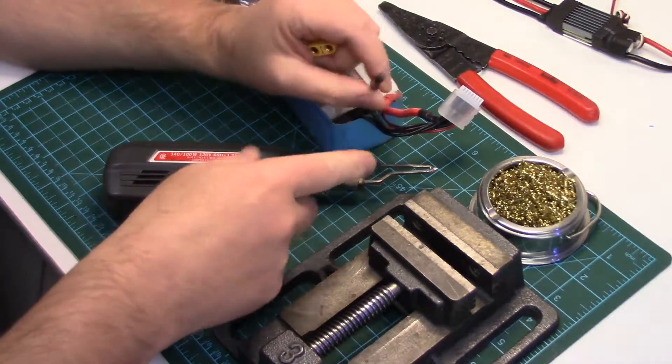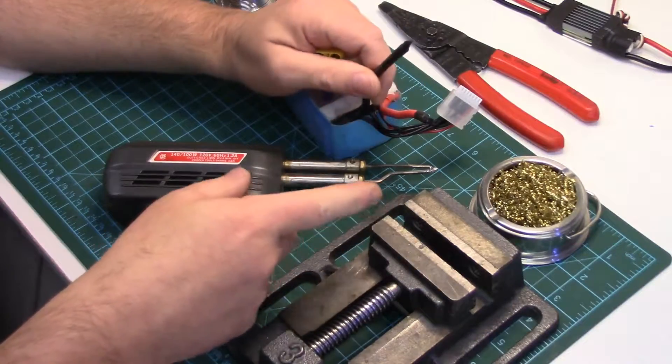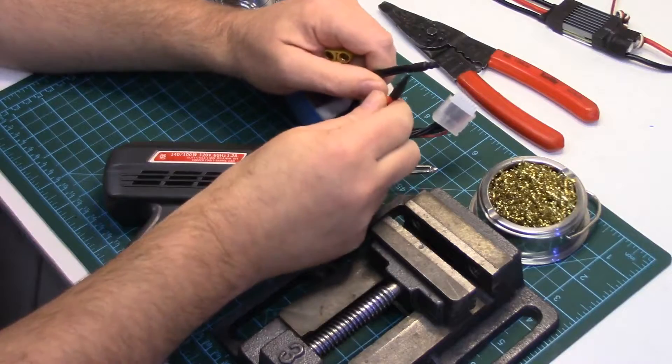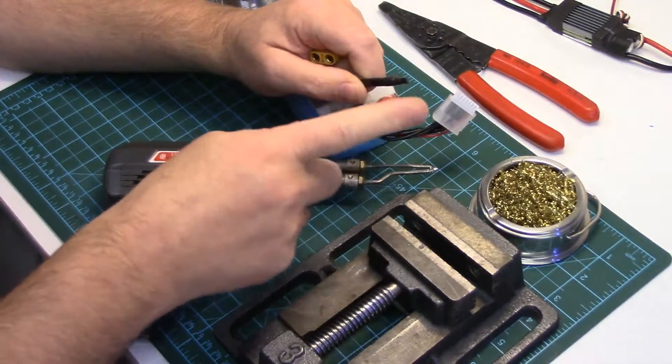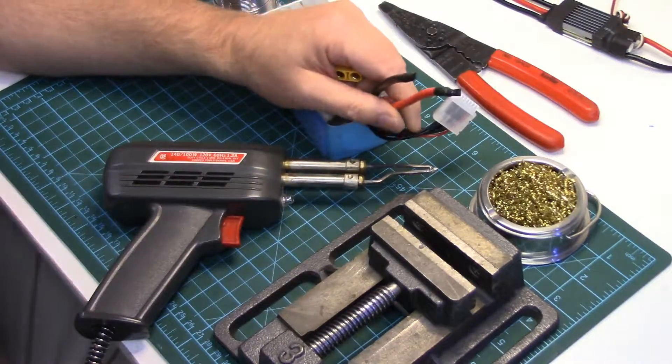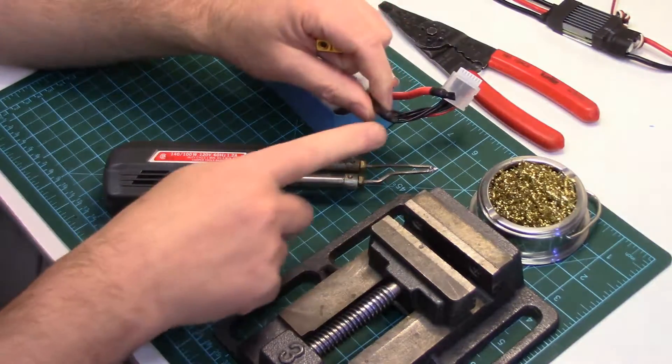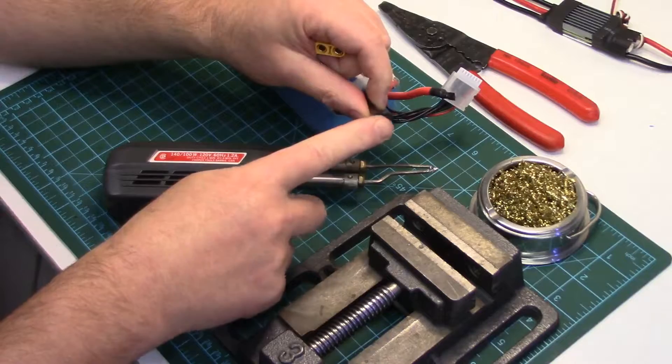With battery packs, when they don't have connectors or if you're changing connectors, make sure you only do one wire at a time because there is a shorting potential here if you were to have both these ends exposed. When battery packs come with no connectors, they'll usually be heat shrink like this or taped off.